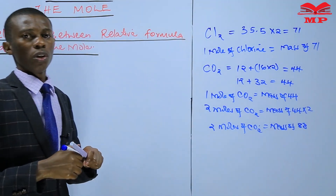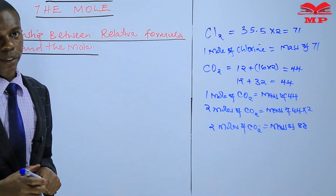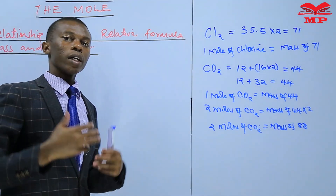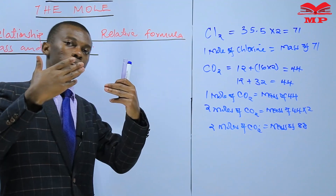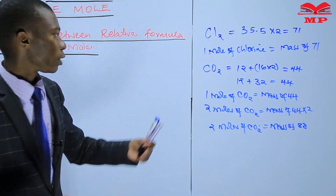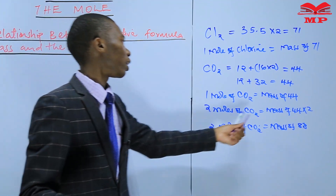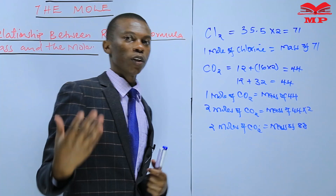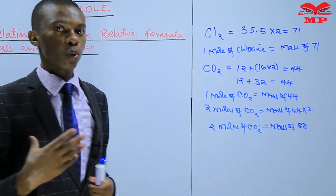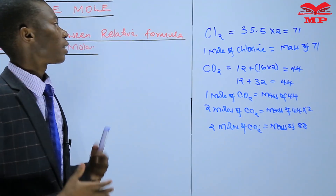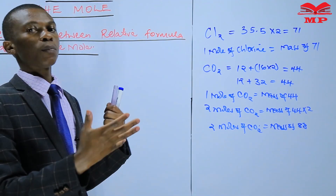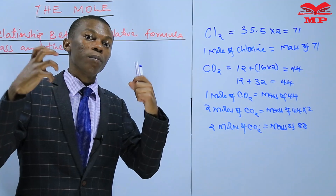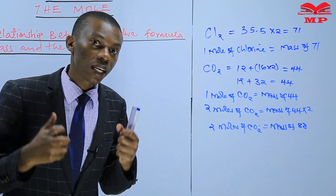That is how you go about it. If it's about 0.5 moles, then you divide 44 by 0.5, and you get 22. That is the relationship we were discussing in the previous lesson.